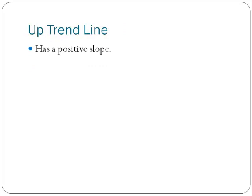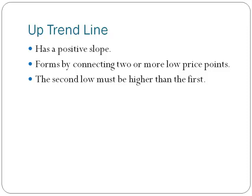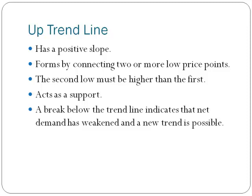The uptrend line has a positive slope. It is formed by connecting two or more low points; the second low must be higher than the first. The uptrend line acts as support and indicates that the net demand is increasing amid the rising of prices. A break below the trend line indicates that the net demand has weakened and a change in trend is possible.